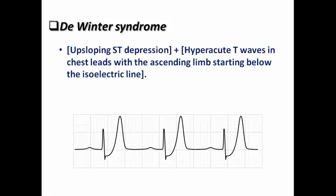How do we diagnose De Winter syndrome on the ECG? De Winter syndrome combines upsloping ST depression with a hyperacute T-wave — more than two-thirds of the QRS complex amplitude, as discussed in the ECG and STEMI lecture. This pattern appears in the precordial leads, with the ascending limb of the ST segment starting below the isoelectric line, meaning the J point is below the isoelectric line and there is no ST elevation.